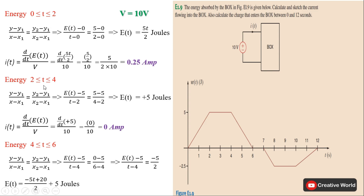Similarly, finding the energy between 2 and 4 seconds. We calculate the energy for that time interval, then find the current from it. Using the straight line equation with initial values y₁ = 5, x₁ = 2 and final values y₂ = 5, x₂ = 4. Putting these values gives 5 joules of energy. Since this is a constant, its derivative is 0, so we get 0 ampere current through this interval.